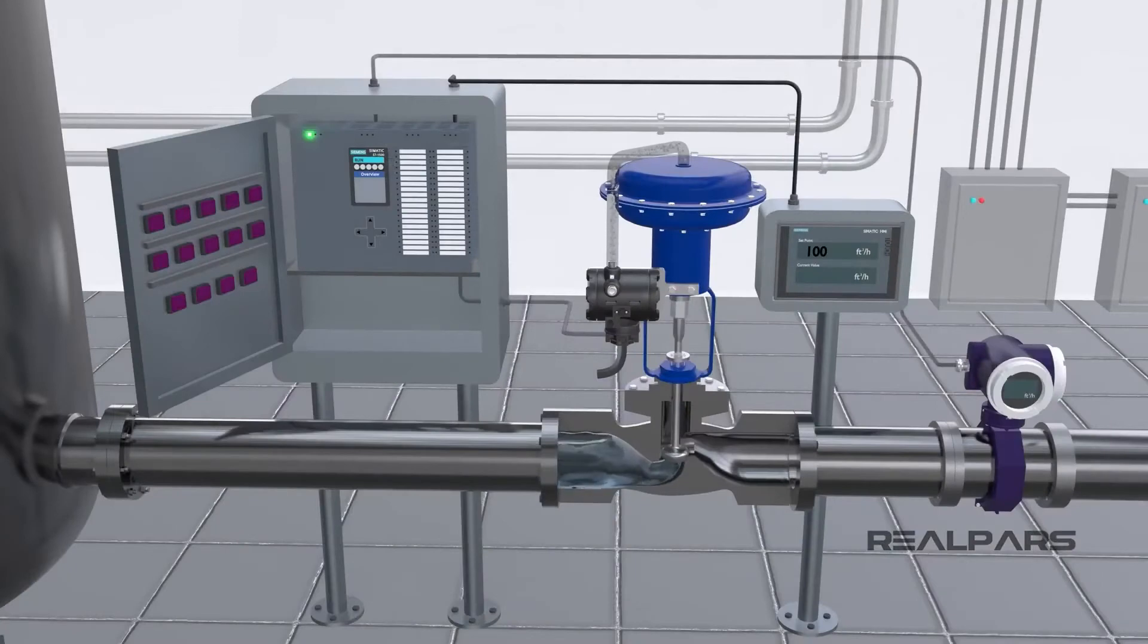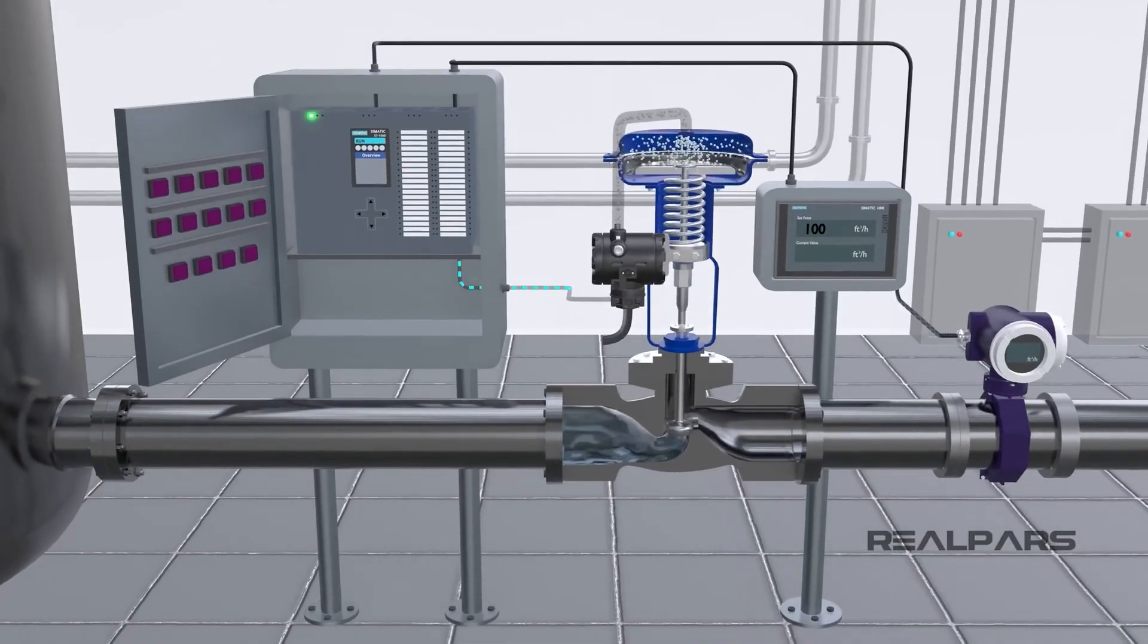The control valve receives a signal from a controller, such as a PLC or a DCS, in order to operate. The controller compares the actual flow rate to the desired flow value, called the setpoint. The controller will produce an output to move the valve to bring the flow rate to the setpoint value. Because of how pneumatic actuators are built, a control valve will fail to a specific position when a loss of the control signal occurs.